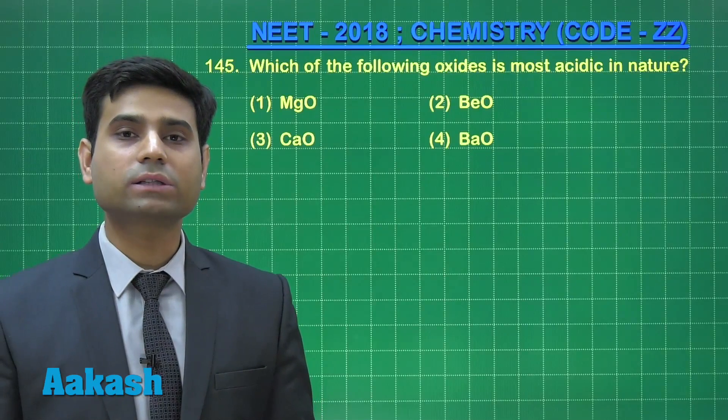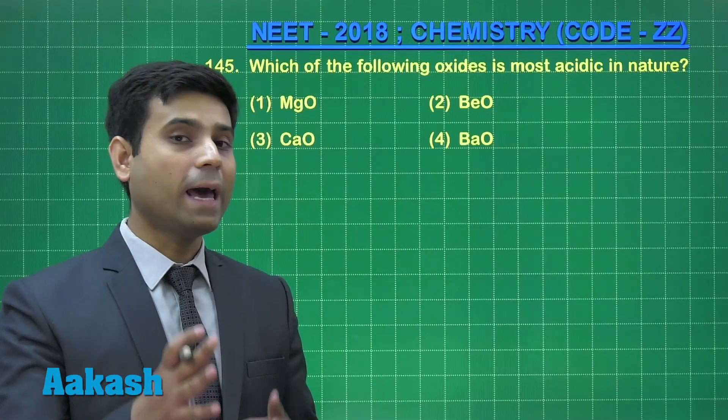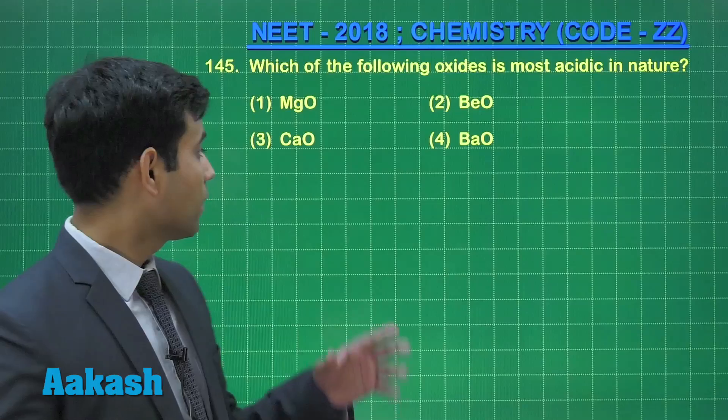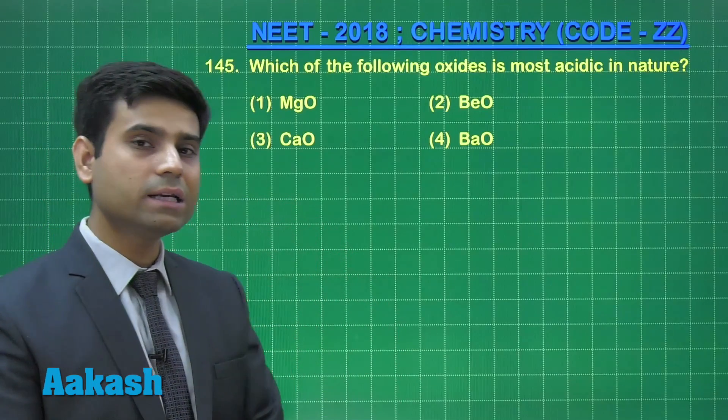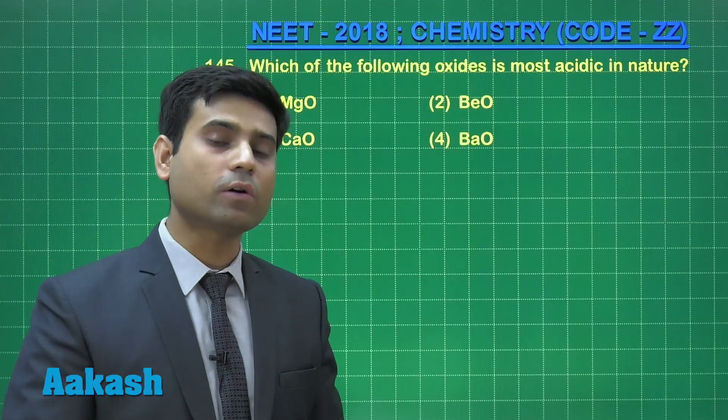Students, metallic oxides are basic in nature. So as we move down the group the metallic character increases, hence basic character of oxide increases.